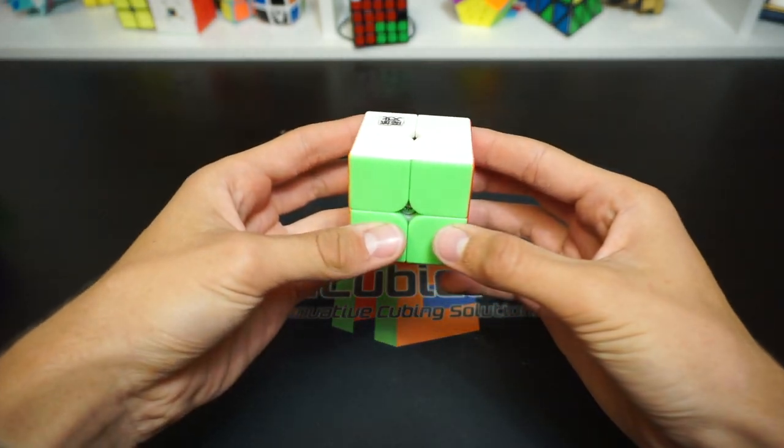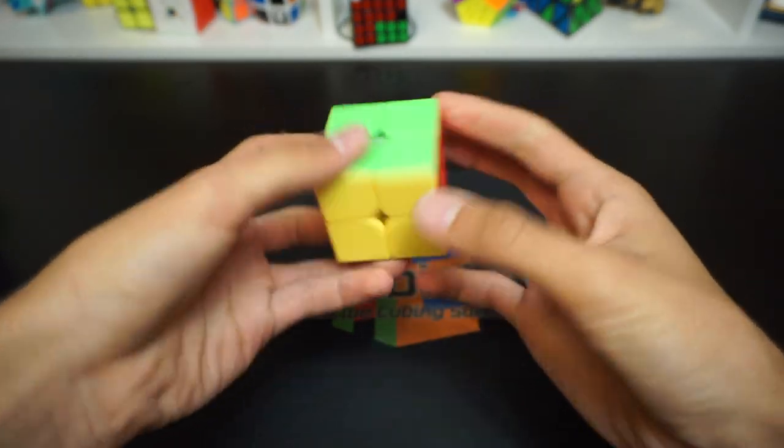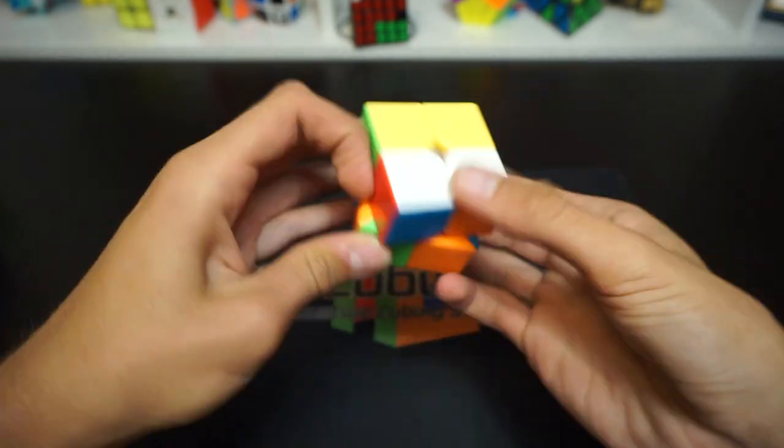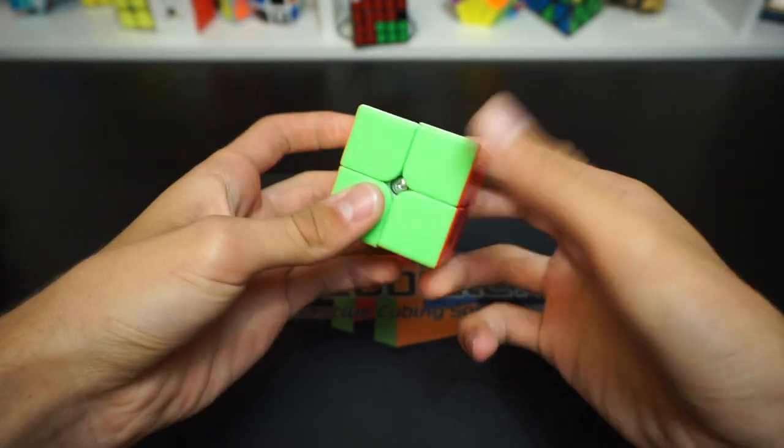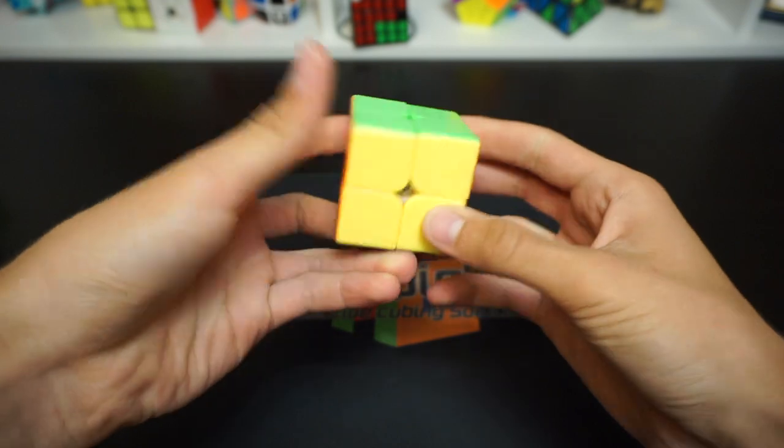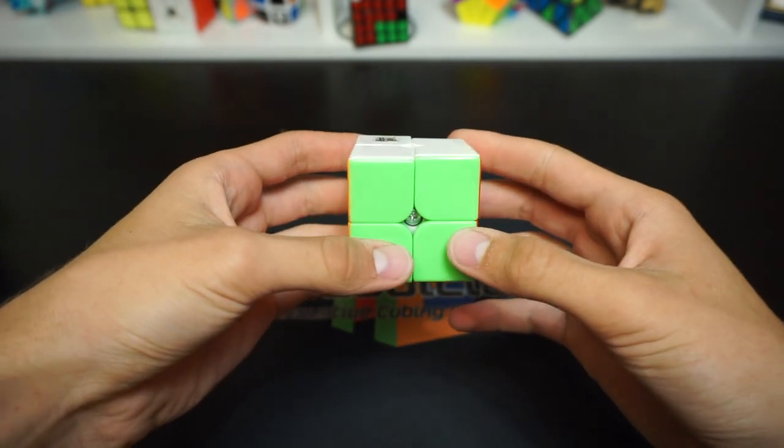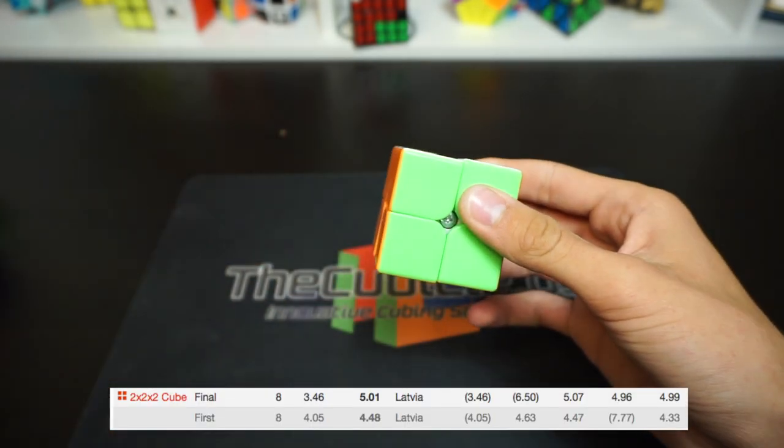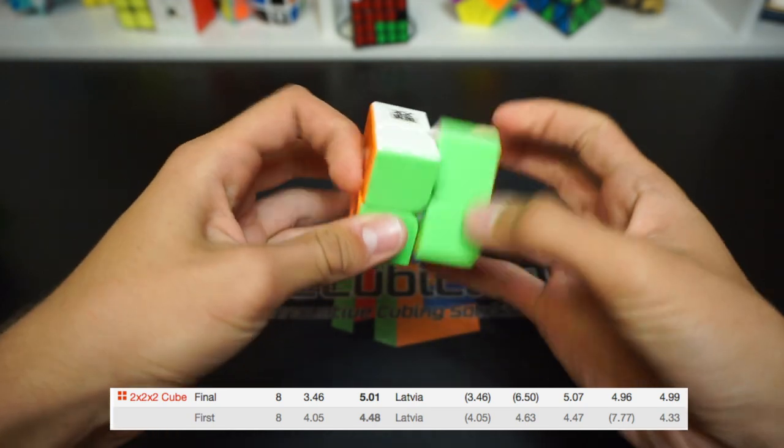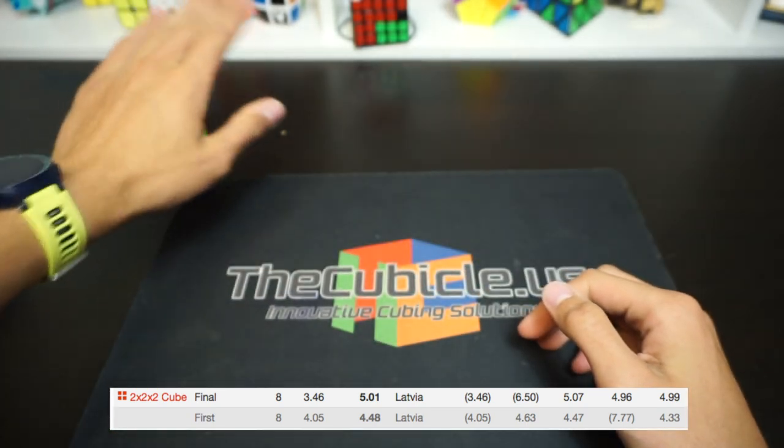Let's start with 2x2. For 2x2 I'll be using the Mojo Weipo and this cube is quite nice. My goal is actually to get the sub-4 average which I didn't get in the Seagulled Open just because I really didn't practice, but I hope I will get it.